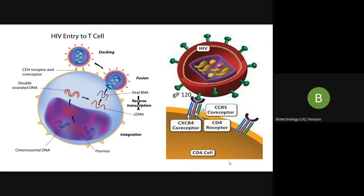HIV infects CD4 T lymphocytes, also called T helper cells. These cells signal and activate other immune cells. Once infected, the virus enters the white blood cells or macrophages. The GP120 protein of HIV is the most important component in this process.